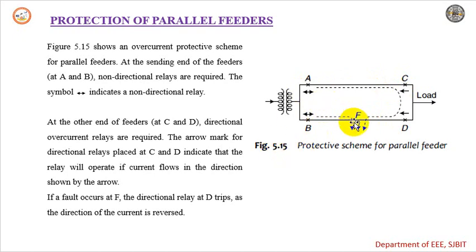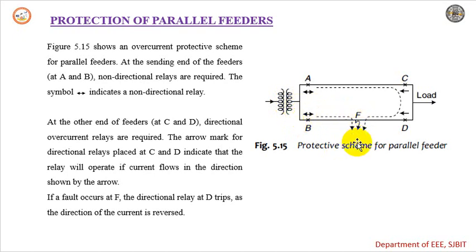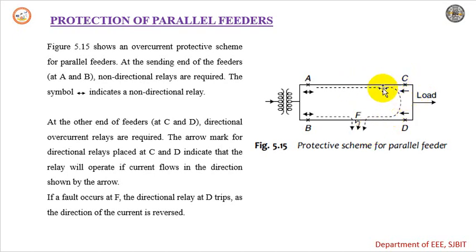Let us consider if there is a fault on feeder BD. When the fault occurs, the current will flow towards the faulty part. Since we are using a non-directional relay at B, the current flows to the faulty part. The current is also flowing in A, which is non-directional, and in C as well. But since the current is flowing in the normal direction at C, C will not trip.